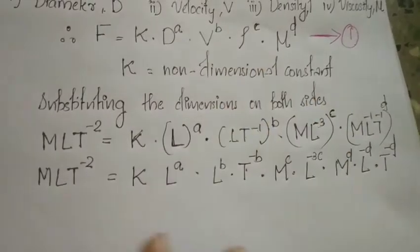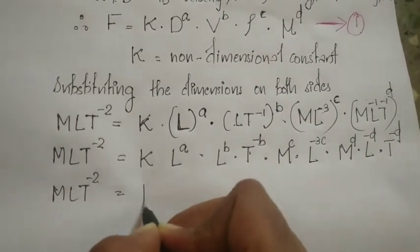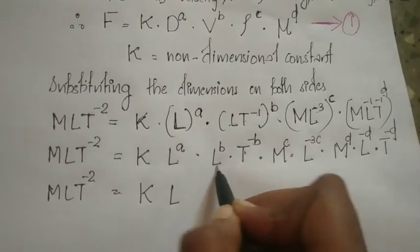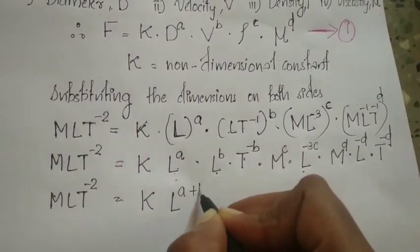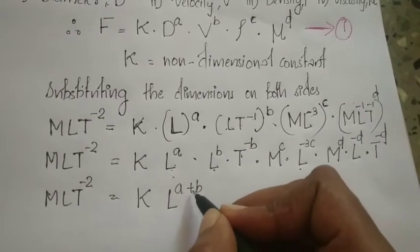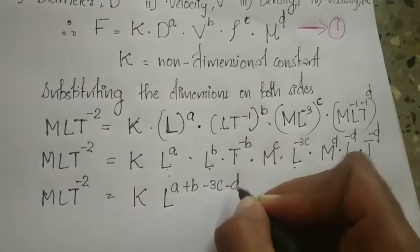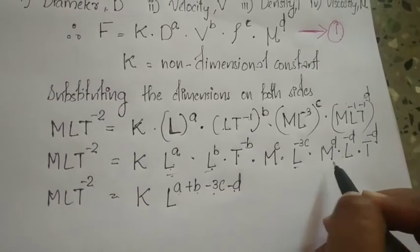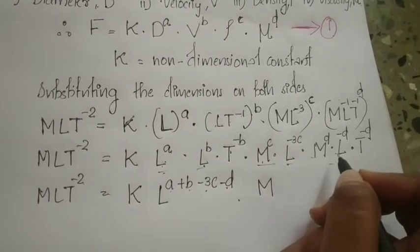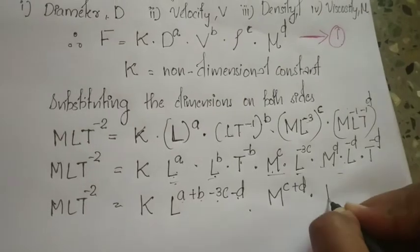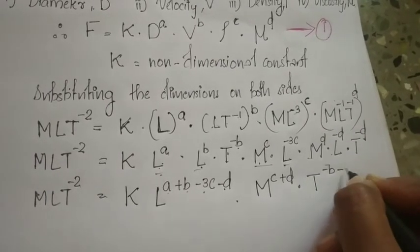Now grouping the terms: for L, we get L raised to a plus b minus 3c minus d. For M, we get M raised to c plus d. For T, we get T raised to minus b minus d.